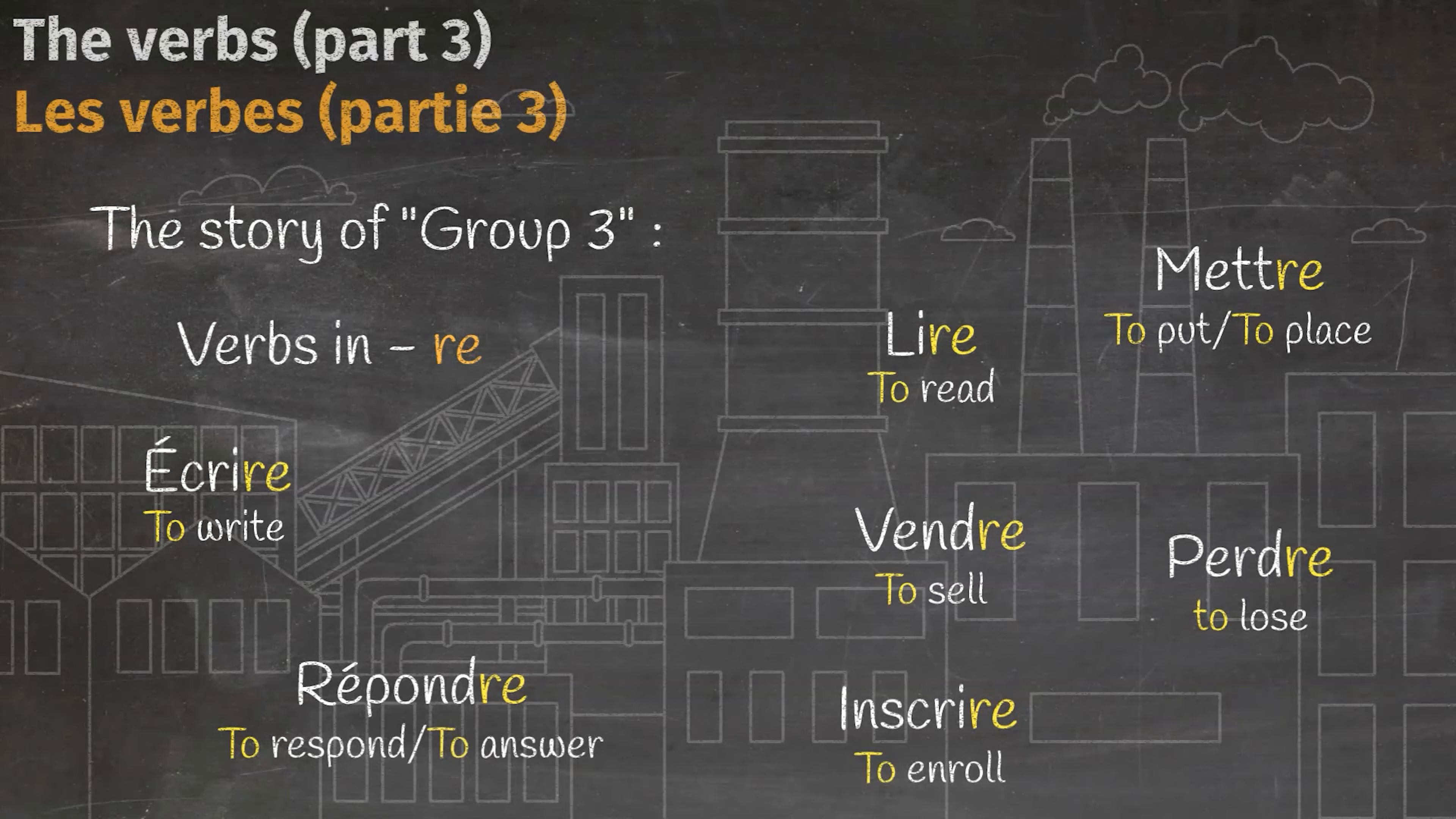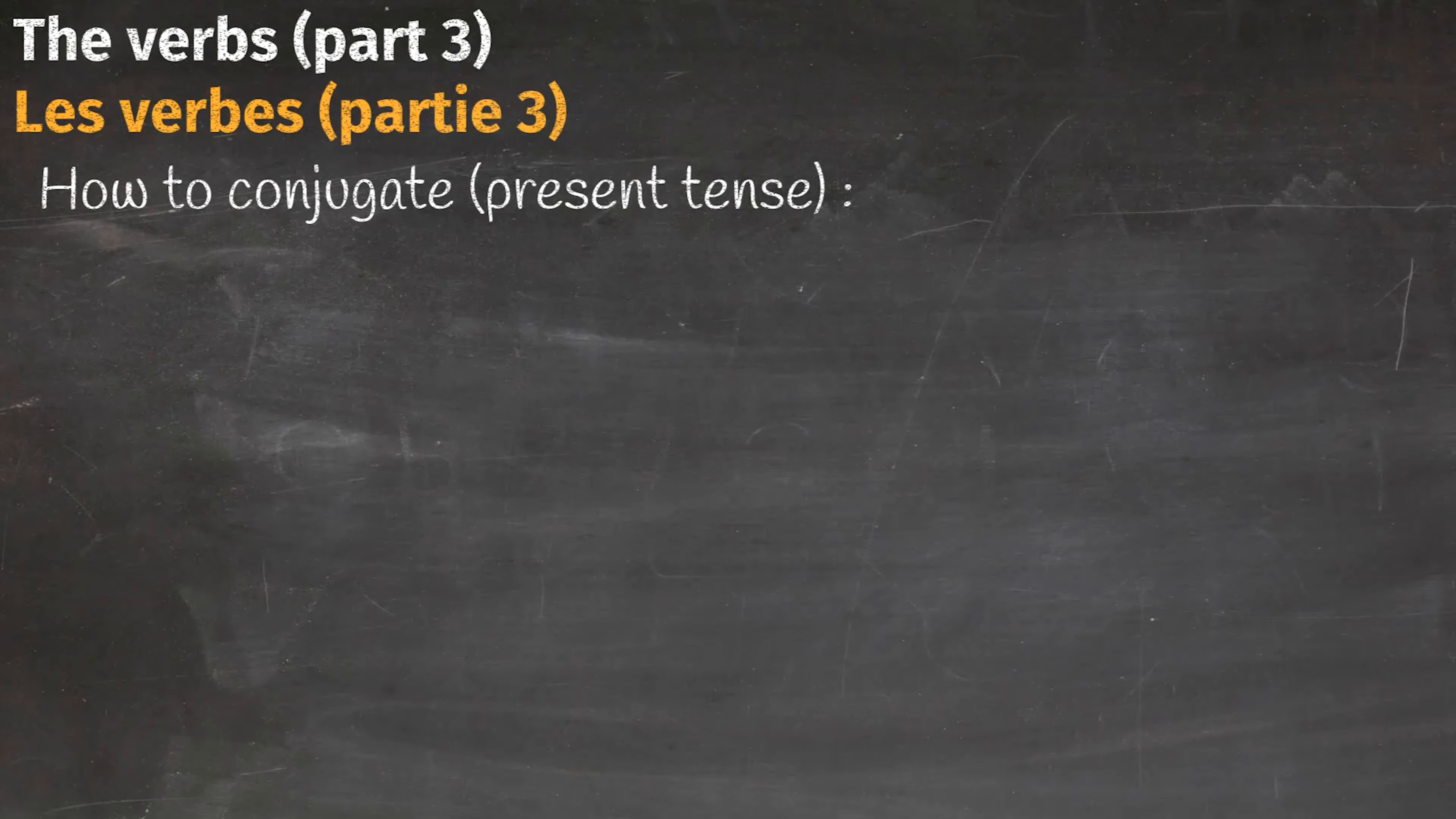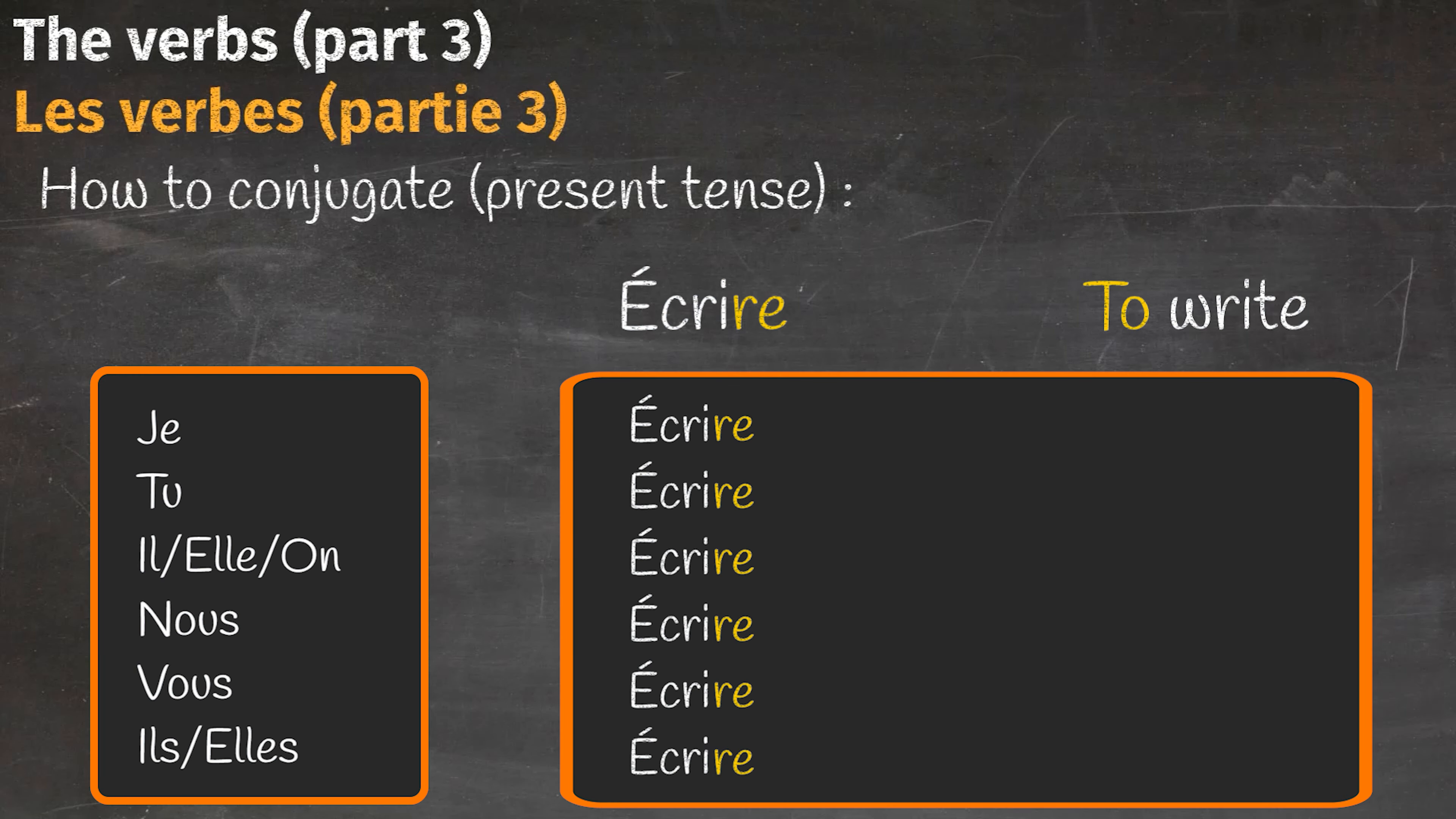But the question is: how to conjugate the third group of verbs in French? Well, the first step is unboxing the verb, which means eliminating the final '-re'. Now it's time to assign personalities.